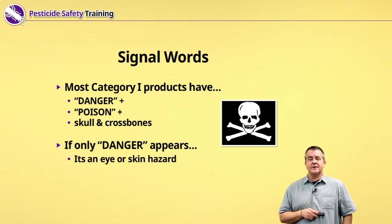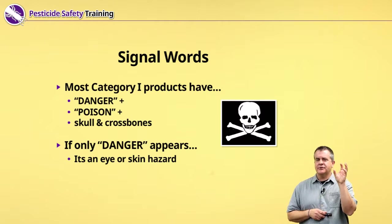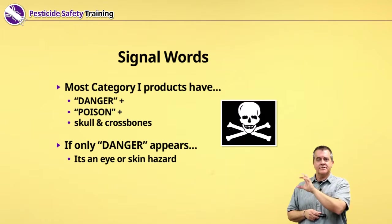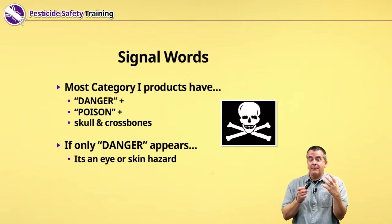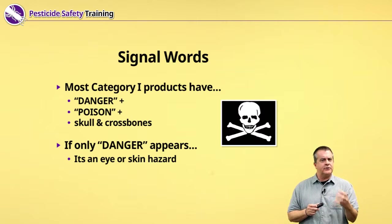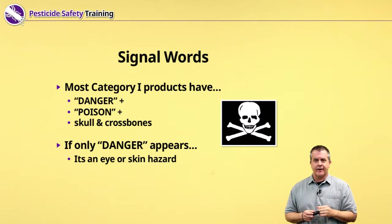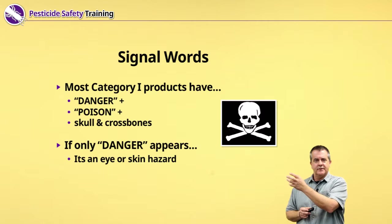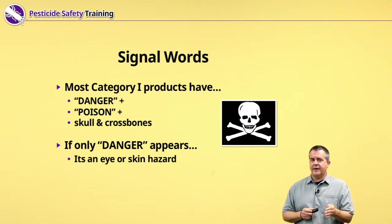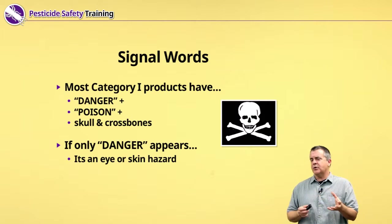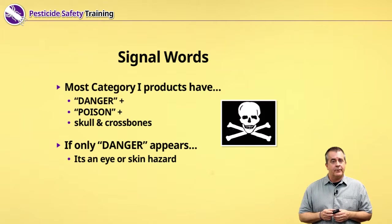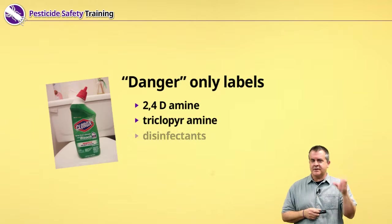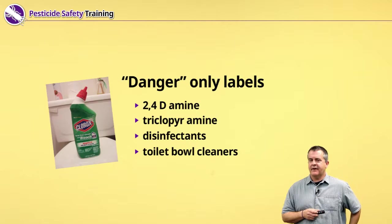Most category one pesticide products have not only the word DANGER as a signal word, but also include the word POISON and a graphic of the skull and crossbones. If that doesn't get your attention, I don't know what will — that means the compound is an oral toxicant, and if you ingest it there's a very good chance you're going to die. But there are pesticides that just have a DANGER signal word without POISON or skull and crossbones. That means the oral LD50 value is probably a relatively large number — it's not that toxic orally — but that chemical is corrosive to your eyes and skin.